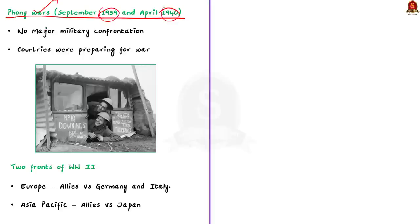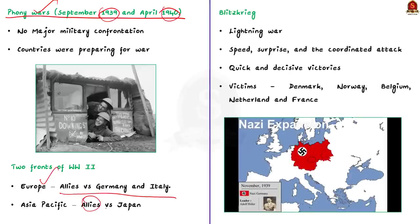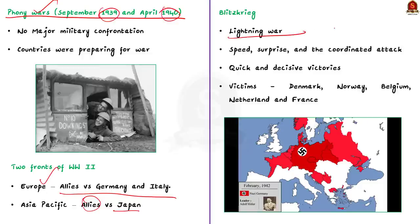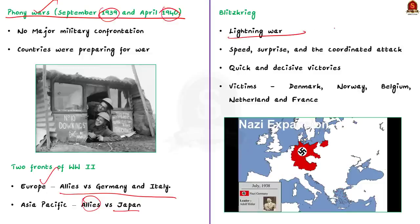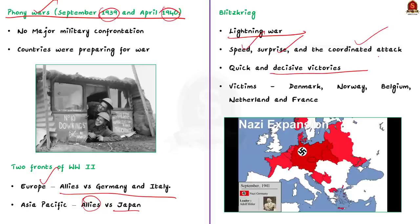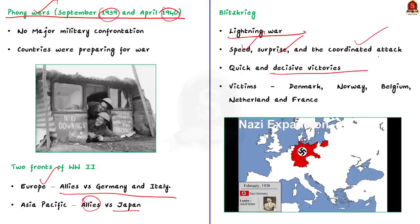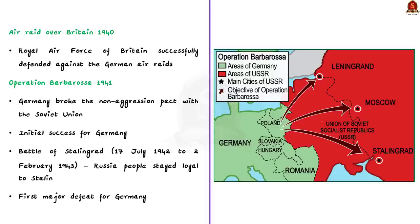World War II was fought on two distinct fronts: Europe and the Asia-Pacific. In Europe, the allies fought Germany and Italy; in the Asia-Pacific, the allies fought Japan. On the Western Front, Germany employed the Blitzkrieg strategy — meaning 'lightning war' — characterized by speed, surprise, and coordinated use of military elements to achieve quick and decisive victories. Using this strategy, Hitler captured Denmark, Norway, Belgium, Netherlands, and finally France. Germany later launched air raids over Britain, but the Royal Air Force successfully defended against them.